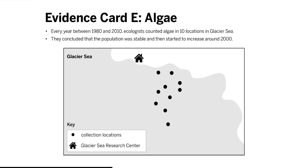Evidence card E supports Claim 1. It shows that the algae population increased, which would provide more energy storage molecules for the zooplankton, allowing the zooplankton to produce more, resulting in more births. A larger zooplankton population would provide more energy storage molecules to the moon jelly population, which would allow the moon jellies to reproduce more, resulting in more births.